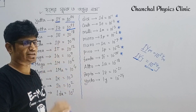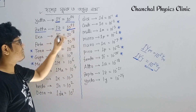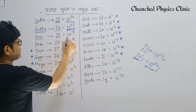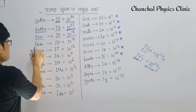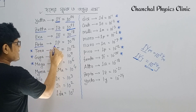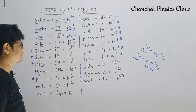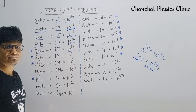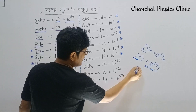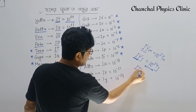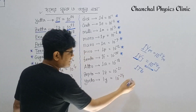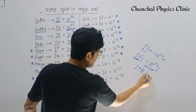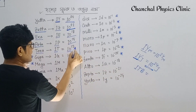So 1 Zetta is 10 to the power 21. Then Exa is 10 to the power 18. Peta is 10 to the power 15. And Tera is 10 to the power 12 — for example, 1 Terabyte is 10 to the power 12 bytes.